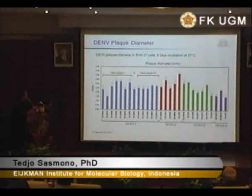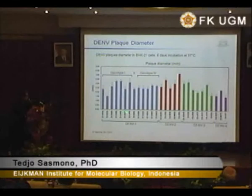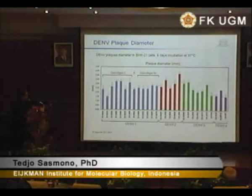Dengue 4 tends to always produce quite small plaques, and the plaques are not very clear — there are some cells still there. So the plaque characteristics of dengue viruses in Indonesia are quite diverse in morphology. We measured the plaque size of dengue viruses on six days of incubation in BHK21 cells.